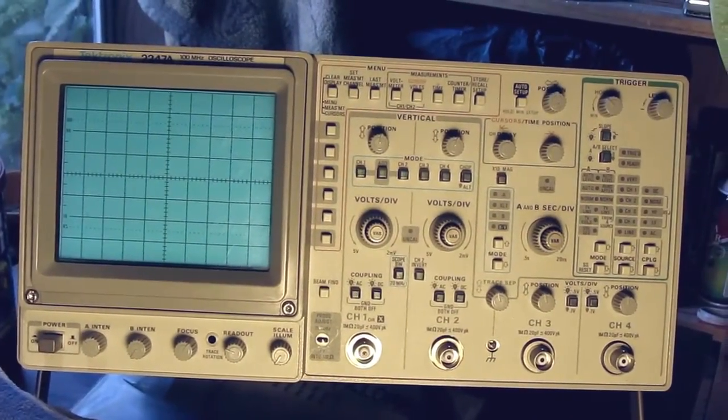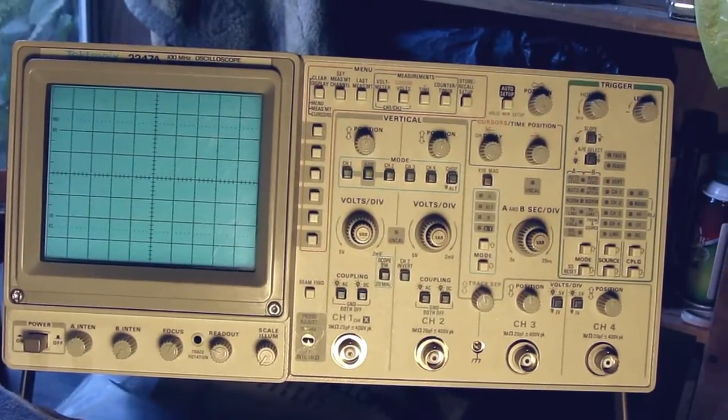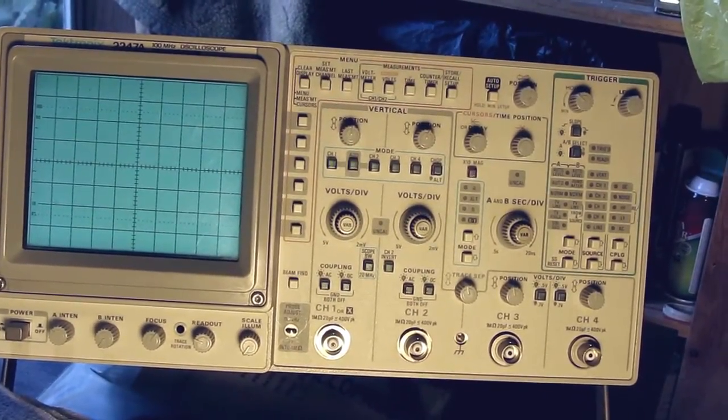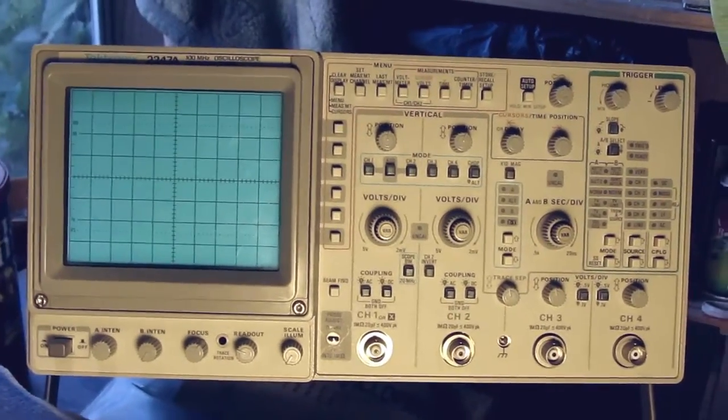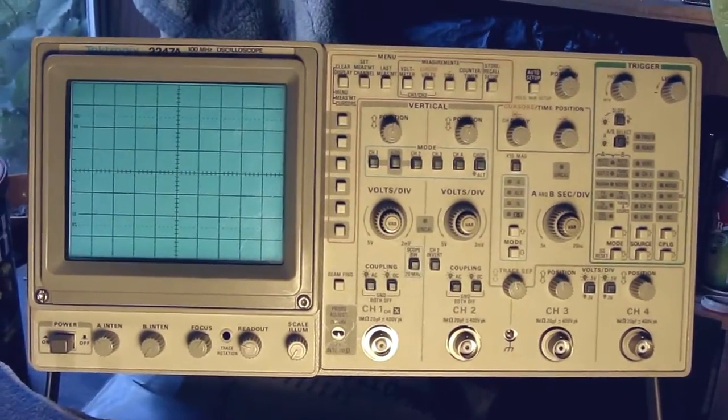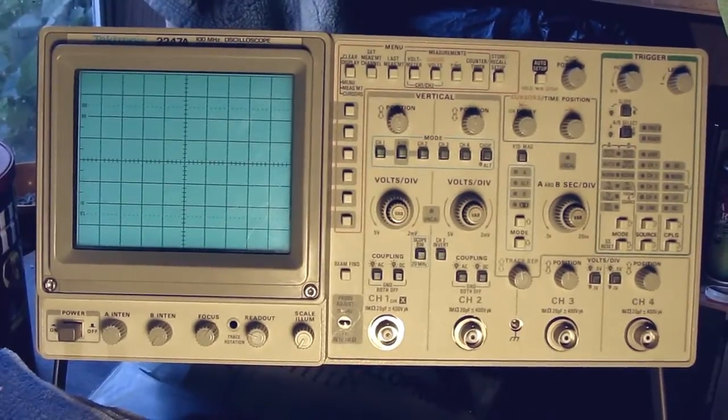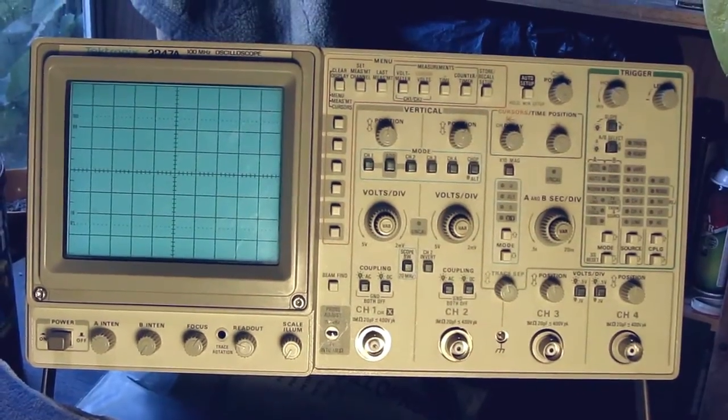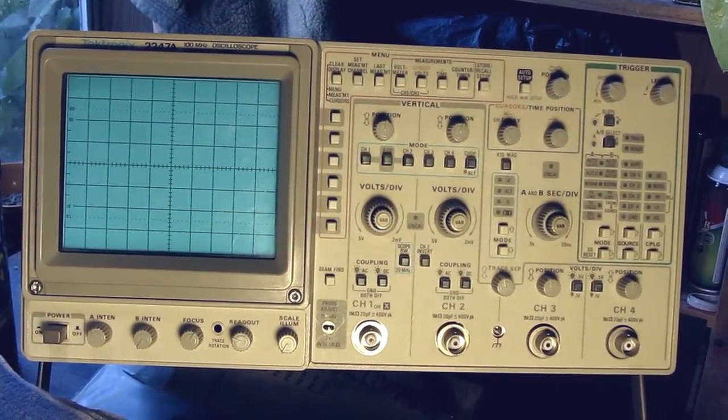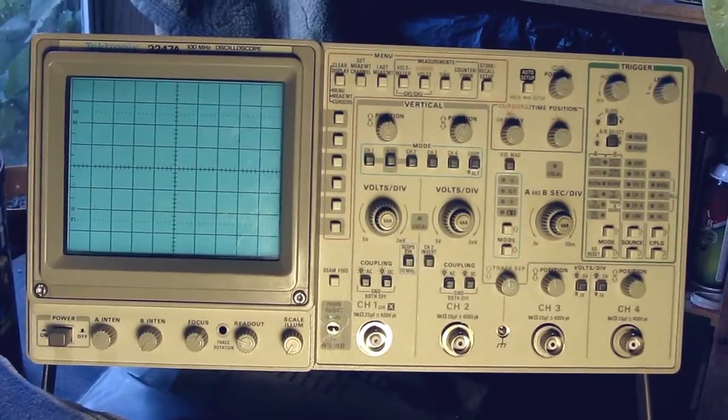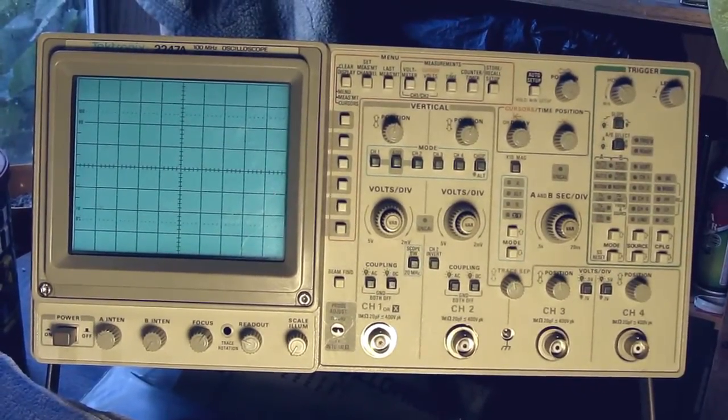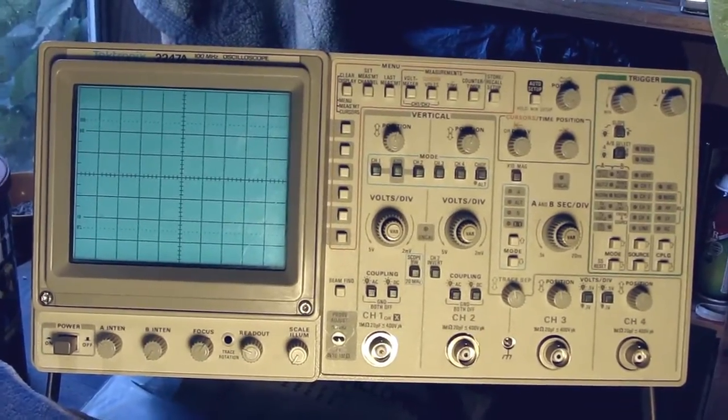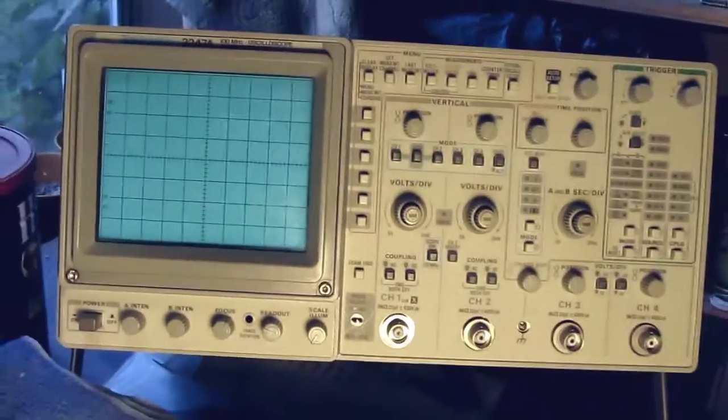Okay, this is my Tektronix 2247a, 100 megahertz oscilloscope. I just took delivery of it yesterday and I'm pretty happy with it. Bought it off eBay as usual. Most of the stuff I buy on eBay is pretty good and this one turns out to be real good.